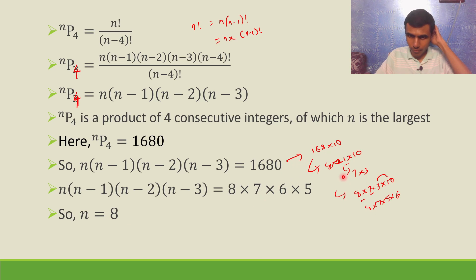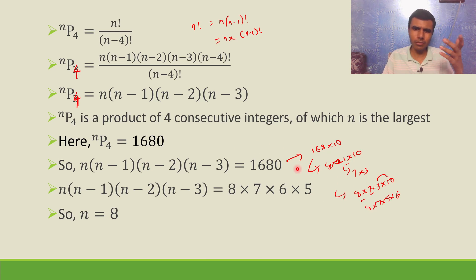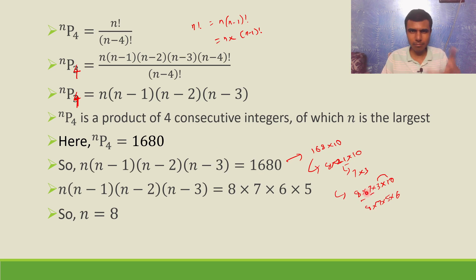Hope you got the logic of how I kept splitting and factorizing it. If you feel this is tough, you can go for prime factorization and rearrange a little — you'll end up at the same answer. The logic is that we need four consecutive integers. As soon as I got 7 and 8, I wrote 30 as 5 and 6. So the answer is n equals 8. Thank you.